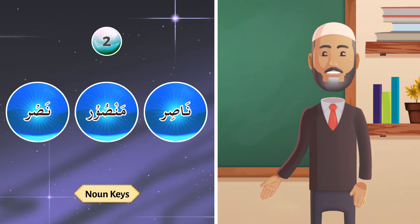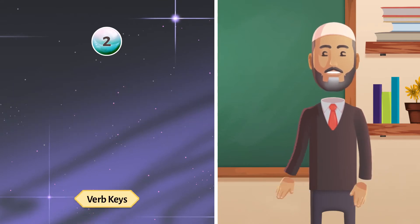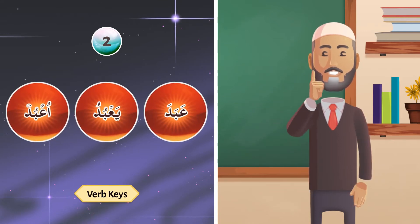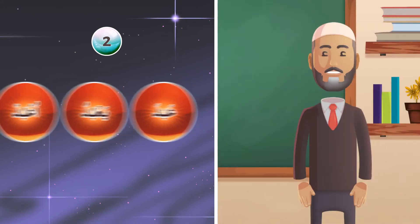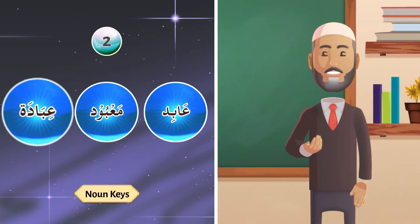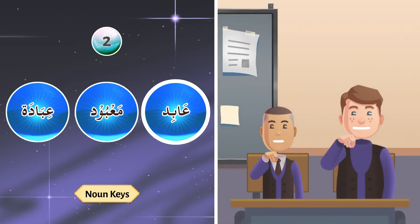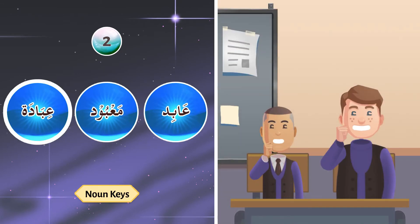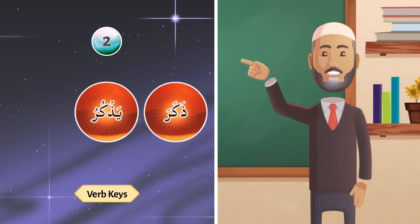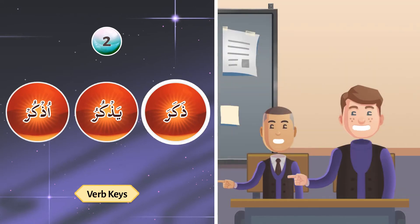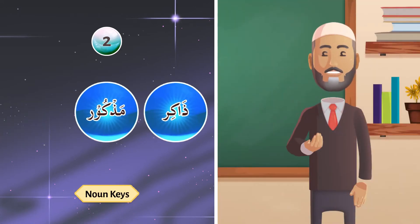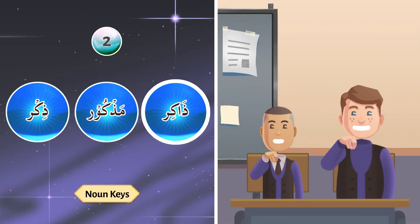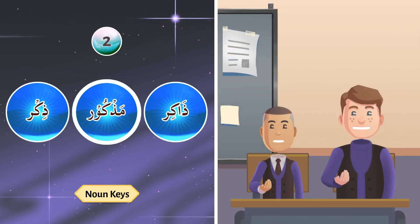On the pattern of nasara, yansuru, we have abada and zakara and khalaqa. Repeat after me: abada, ya'budu, u'bud — abid, ma'bud, ibadah. Zakara, yadhkuru, udhkur — zakir, madhkur, dhikr.